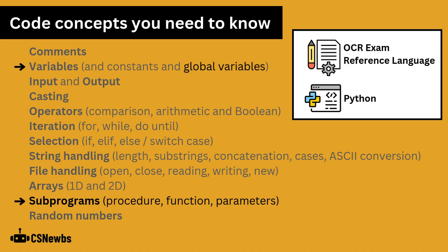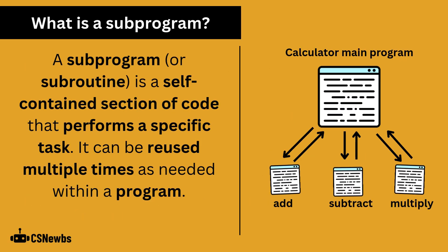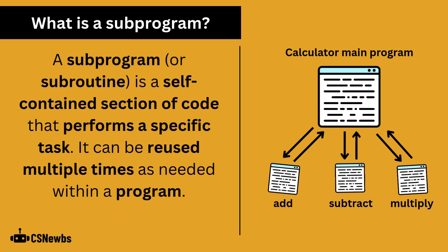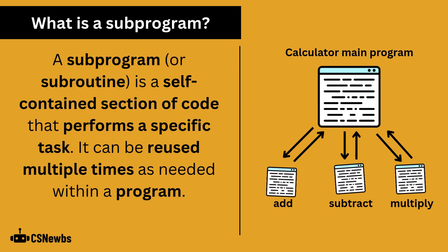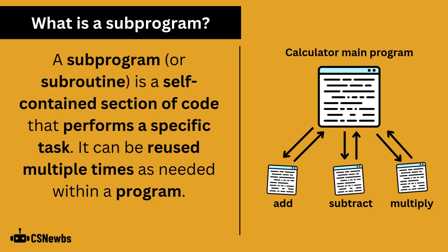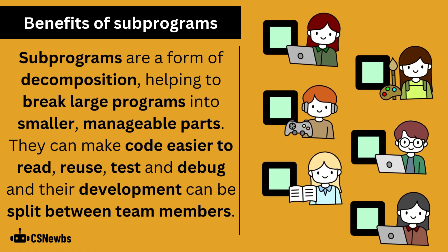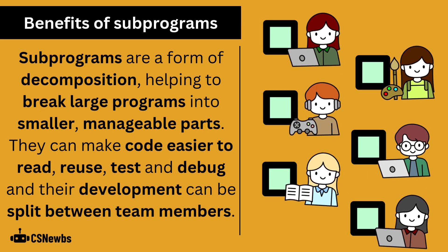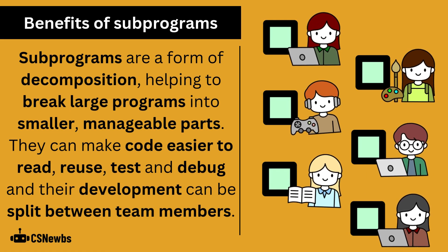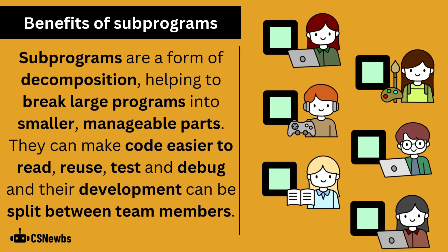Subprograms: you must be able to understand and use both types of subprograms, which are procedures and functions. You also need to know how to use parameters and global variables. A subprogram or subroutine is a self-contained section of code that performs a specific task. It can be reused multiple times as needed within a program. Subprograms are a form of decomposition, helping to break large programs down into smaller, more manageable parts.